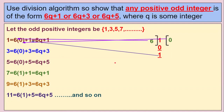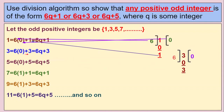Now we will take one more odd number: 3. When you divide 3 by 6, six goes zero times, so you get a remainder of 3. This can be written as 6 × 0 + 3, which is in the form of 6q + 3.